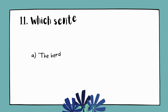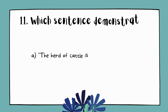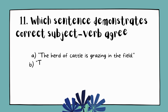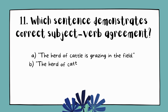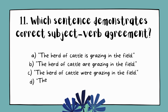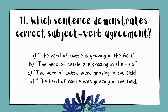Question 11. Which sentence demonstrates correct subject-verb agreement? A. The herd of cattle is grazing in the field. B. The herd of cattle are grazing in the field. C. The herd of cattle were grazing in the field. D. The herd of cattle was grazing in the field.